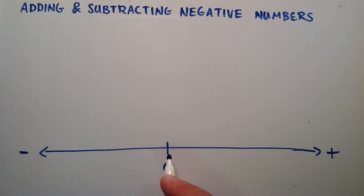So when we add a negative number, then we add it in this direction. When we add a positive number, we add it in that direction. So for example,